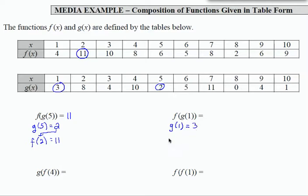I'm going to take that result and use it as input into function f. So that result goes inside here. When I compute or try to evaluate f of 3, I'm looking for the output. When the input is 3, which is 10. Therefore, f of g of 1 equals 10.